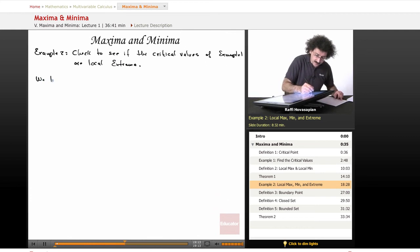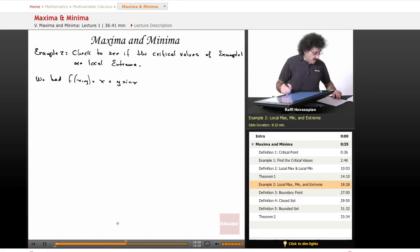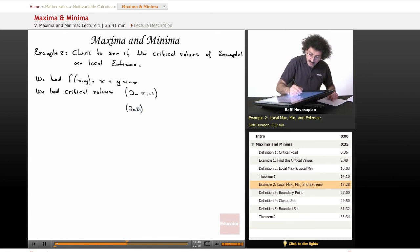We had the fact that f of xy is equal to x plus y times the sine of x. And we had critical values 2n pi, negative 1, and 2n plus 1 pi, 1, defined for all n in z integers. So we have a bunch of critical values.